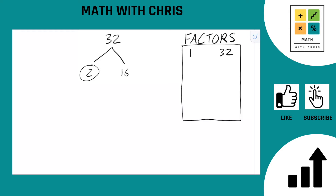Can you think of any two numbers that multiply together to give you 16? I've got a couple of options but I'm going to go with 8 times 2. 2 is done — we know that's a prime number. 8 is not, so we've got to keep going there.